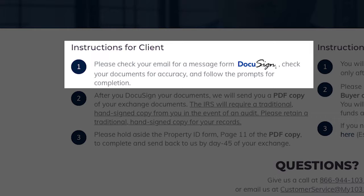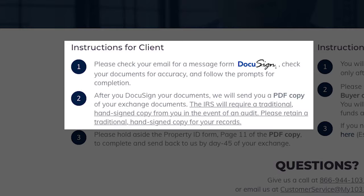Please check your email for a message from DocuSign. Your documents need to be checked for accuracy — just follow the prompts and complete them. After you DocuSign your documents, we will send you a PDF of your Exchange documents and one to your escrow.